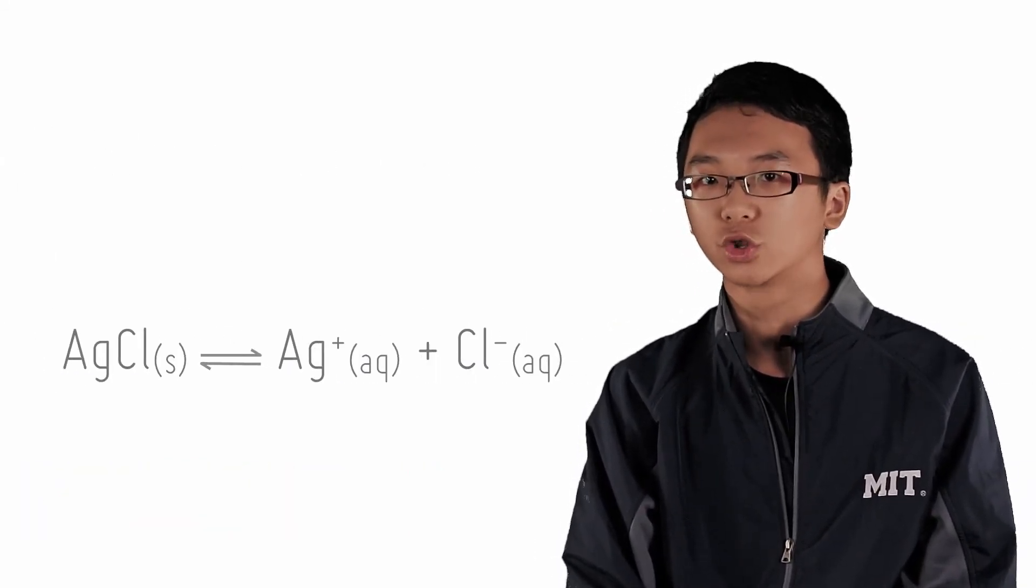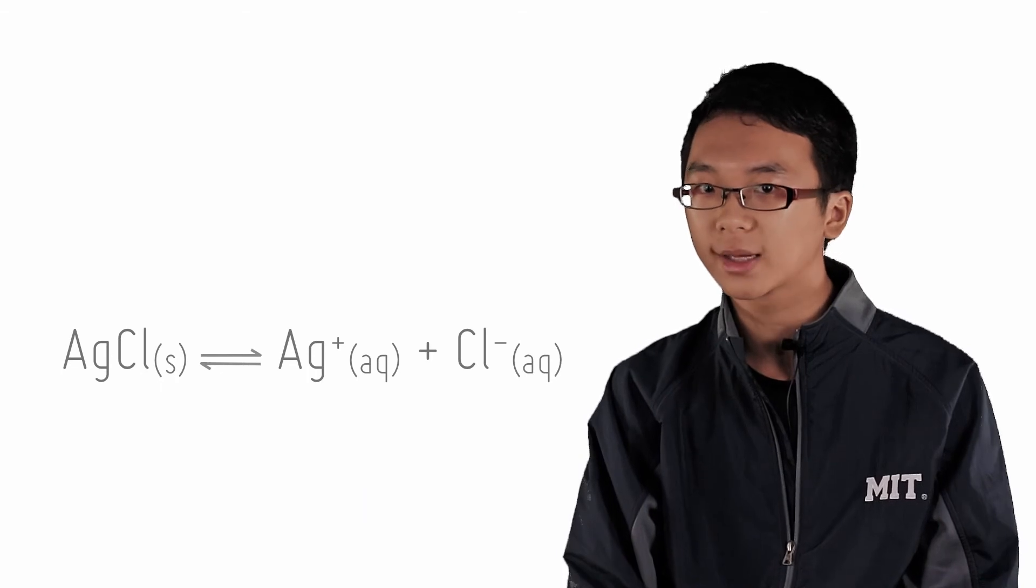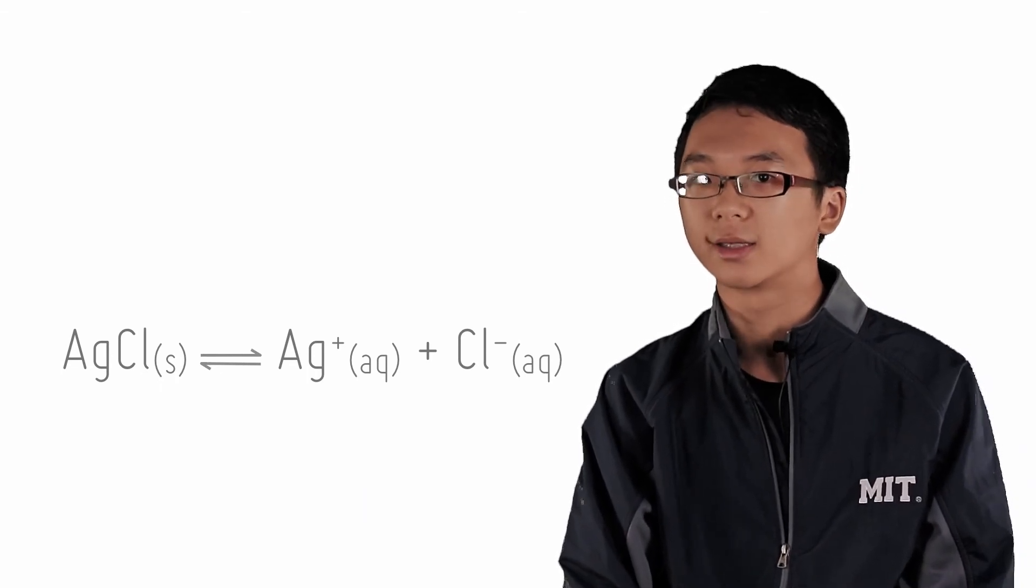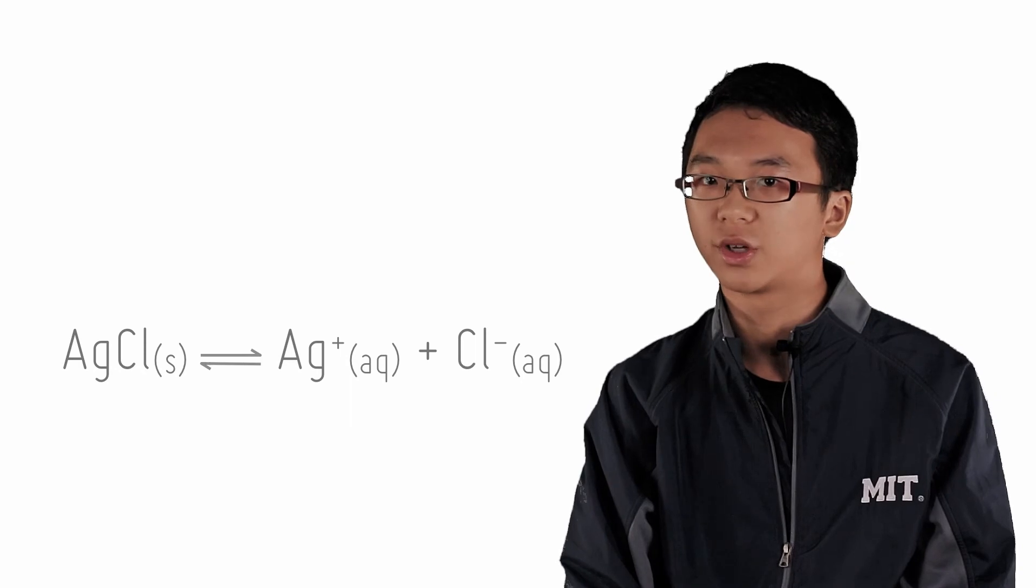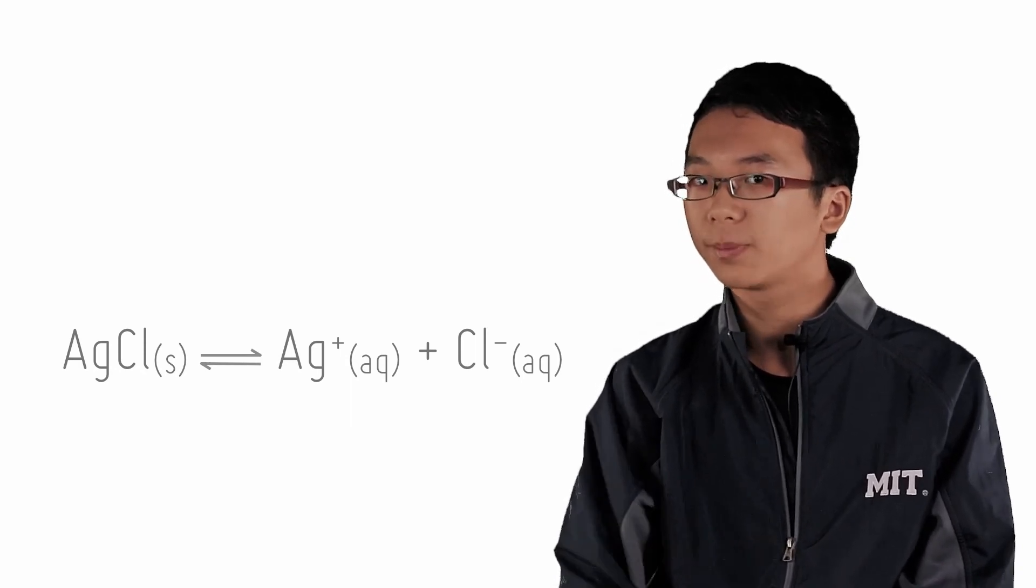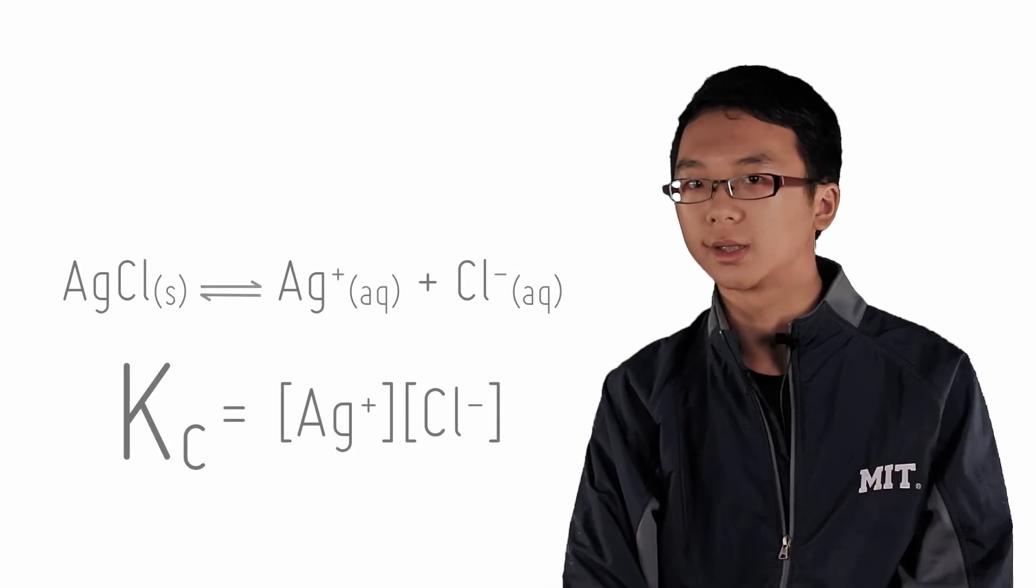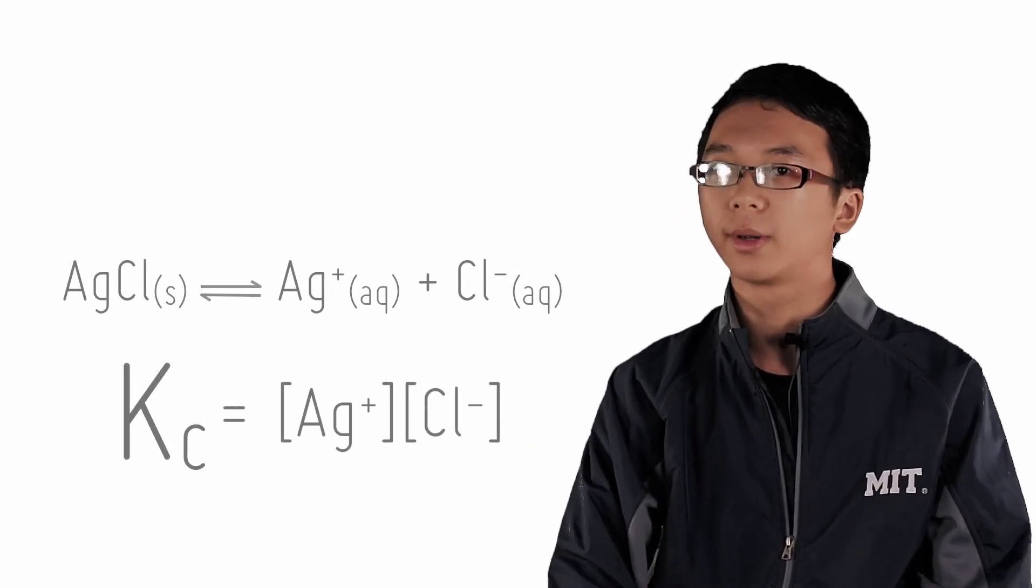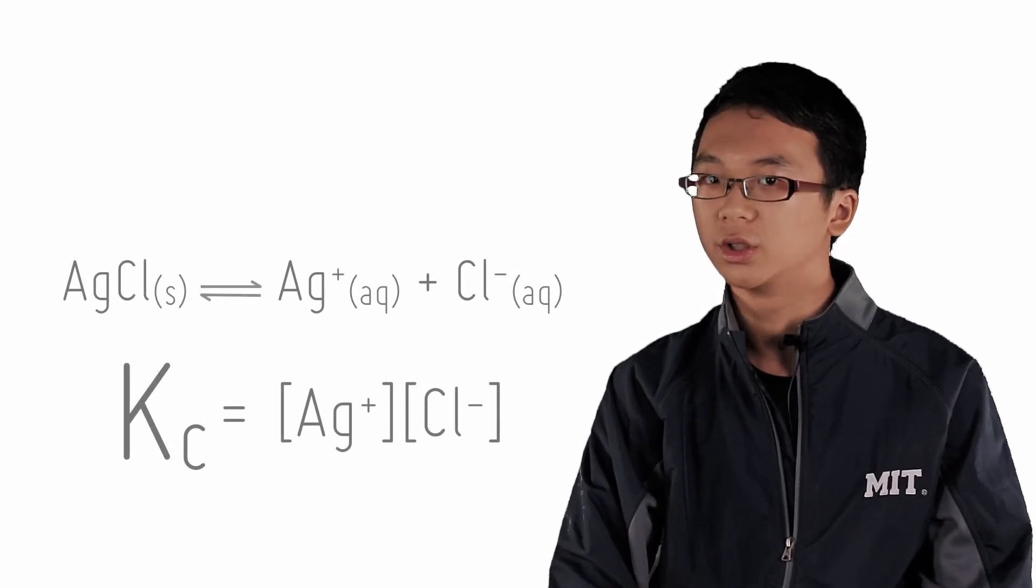For example, in the dissolution of silver chloride to form silver plus and chloride minus ions, the reactant is in the solid form. Given that the concentration of the solid is constant, we can put its concentration as 1, or simply omit it out of the equilibrium constant. We can then calculate the equilibrium constant for this reaction just like that.